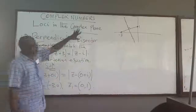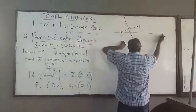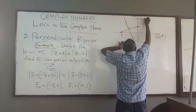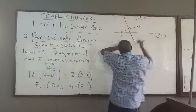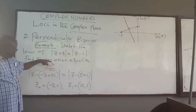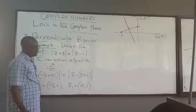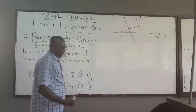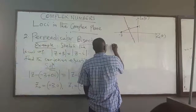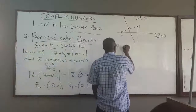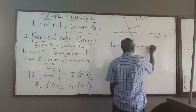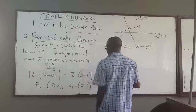Note that this is the complex plane — so this is the real z axis and this is the imaginary axis. Now, how do you find the Cartesian form? You do the same thing. You let z be x plus yi, then you plug it in there.